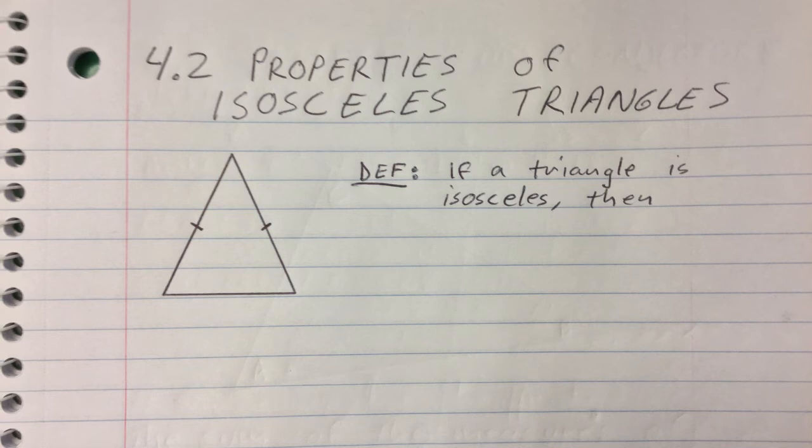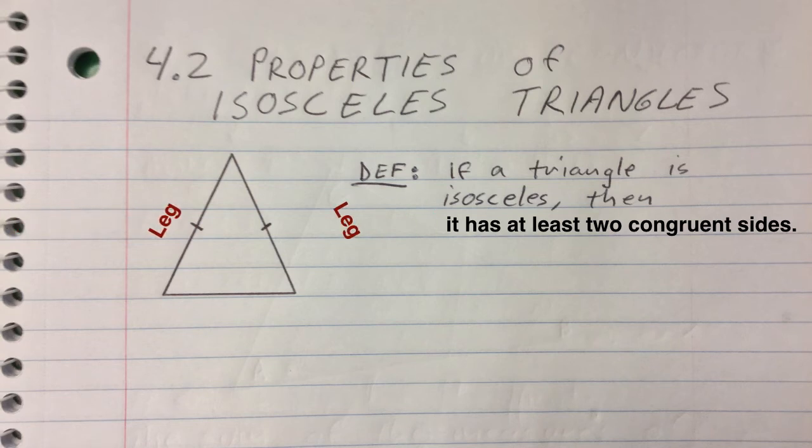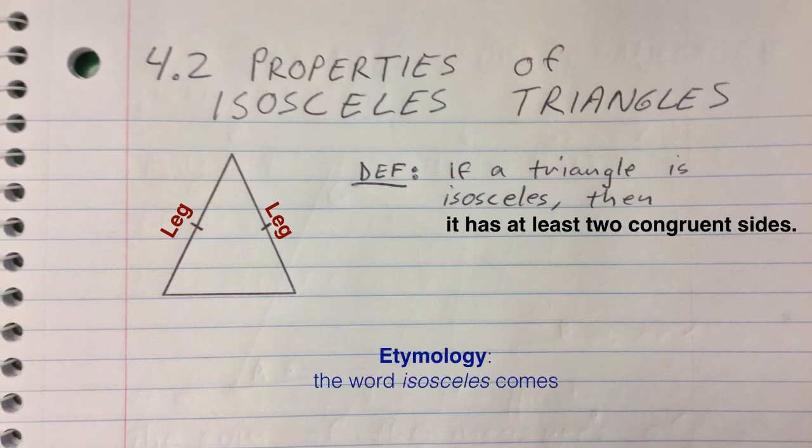Next section 4.2 deals with properties of isosceles triangles. So recall the definition of isosceles is if we have one then it has at least two congruent sides and those sides are called the legs of an isosceles triangle. The word isosceles comes from the two Greek roots isos meaning equal and skelos meaning leg.